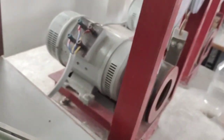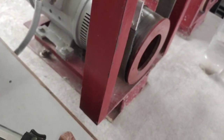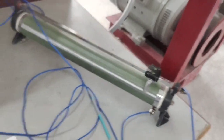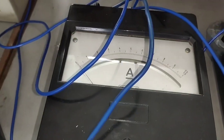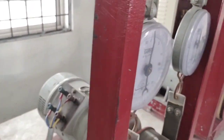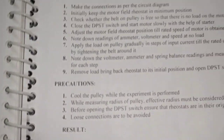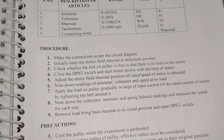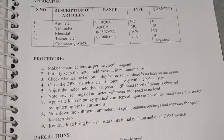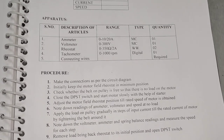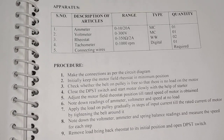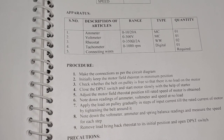Adjust the motor speed by varying the field rheostat position until the rated speed of the motor is obtained — that is 1500 RPM. Then note the readings of the ammeter, voltmeter, S1, and S2 at no load, as the belt is free so there is no load on the motor. Now apply load on the pulley gradually in steps of input current until the rated current of 20 amperes is obtained. For every step, note the values of ammeter, voltmeter, S1, S2, and speed.